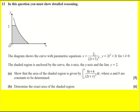The diagram shows a curve with parametric equations for t greater or equal to zero, and the shaded region is enclosed by the curve, the x-axis, the y-axis, and the line y equals 2. We're asked to show the area can be given as this expression. This question is a little different because normally you're looking at a line parallel to the y-axis, but here it's parallel to the x-axis.